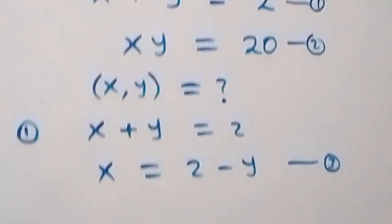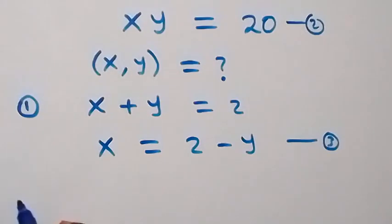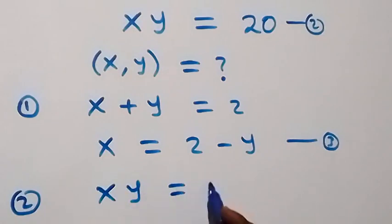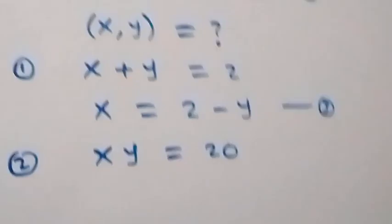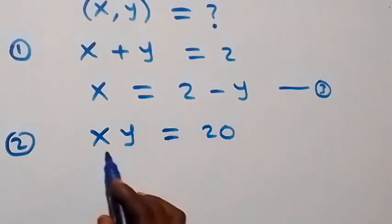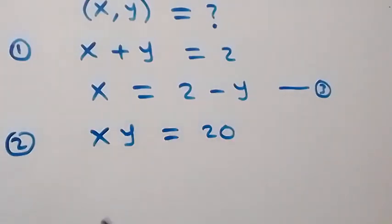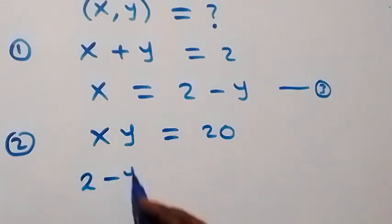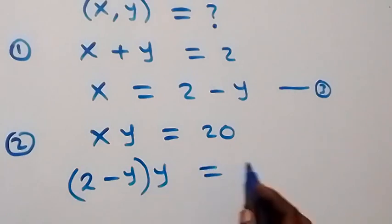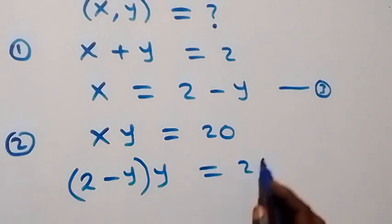From equation 2, which is x times y equals to 20. Now, we can substitute the value of x into equation 2, which implies we have (2 minus y) times y equals to 20.